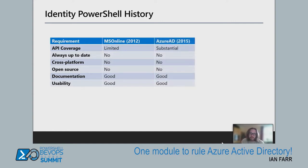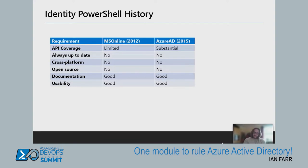The next module is Azure AD — and Azure AD Preview — released in 2015. By far it remains our most popular module in terms of usage; you may see it referred to as v2. API coverage is substantial with a decent amount of functionality. Not always up to date — periodic release cycles. Cross-platform: Windows only. Not open source. Documentation and usability are both very good.